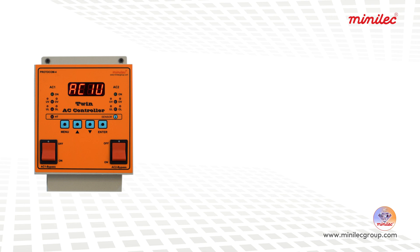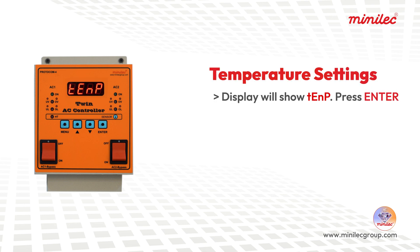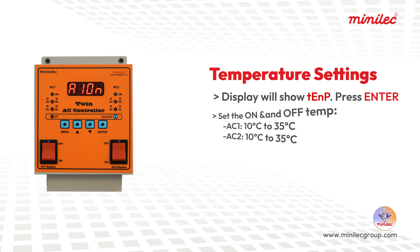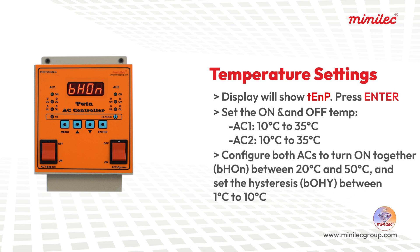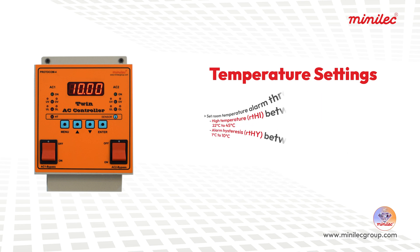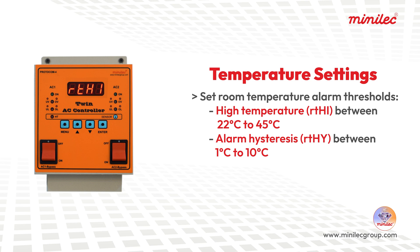Temperature settings: When the display shows TEMP, press ENTER. Set the ON and OFF temperatures for each AC: AC1 between 10°C to 35°C, AC2 between 10°C to 35°C. Configure both ACs to turn on together between 20°C to 50°C, and set the hysteresis between 1°C to 10°C. Set room temperature alarm thresholds — high temperature (RTHI) between 22°C to 45°C, and alarm hysteresis (RTHY) between 1°C to 10°C.